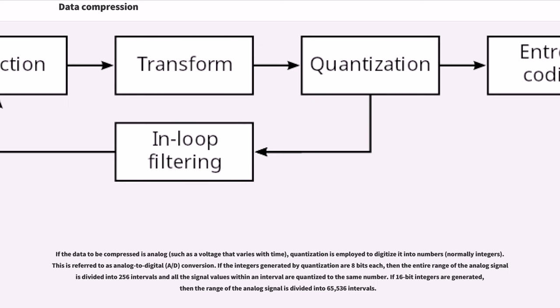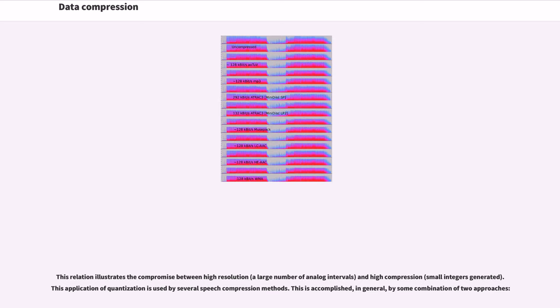If the data to be compressed is analog, such as a voltage that varies with time, quantization is employed to digitize it into numbers, normally integers. This is referred to as analog to digital (AD) conversion. If the integers generated by quantization are 8 bits each, then the entire range of the analog signal is divided into 256 intervals and all the signal values within an interval are quantized to the same number. If 16-bit integers are generated, then the range of the analog signal is divided into 65,536 intervals. This relation illustrates the compromise between high resolution, a large number of analog intervals, and high compression, small integers generated. This application of quantization is used by several speech compression methods. This is accomplished, in general, by some combination of two approaches.